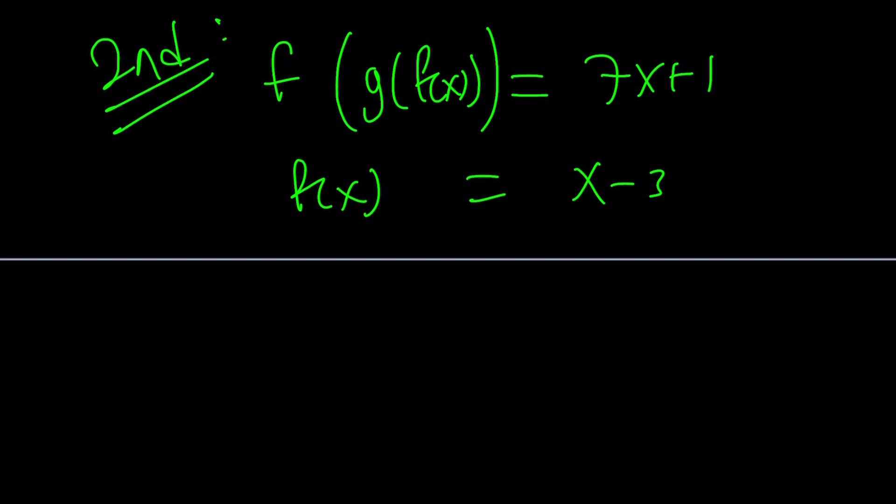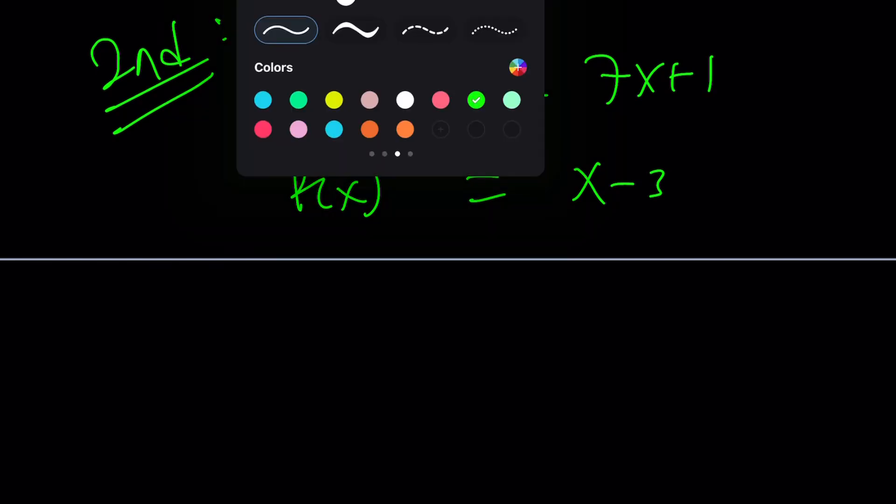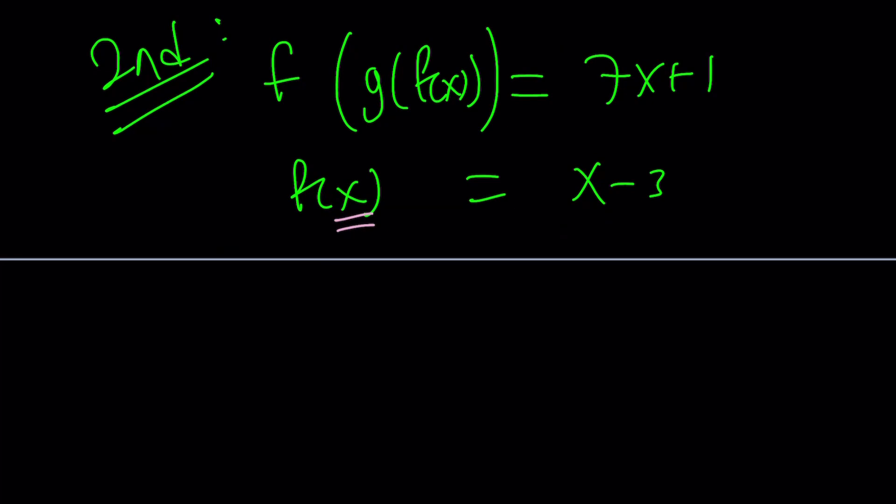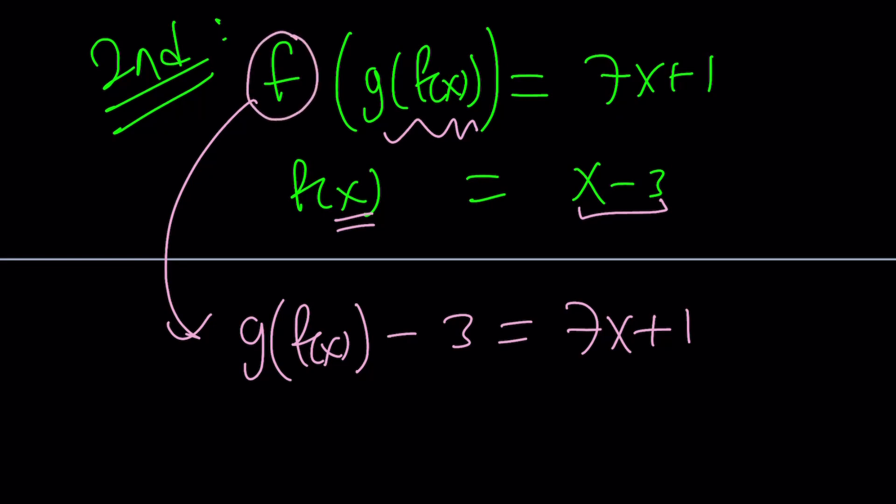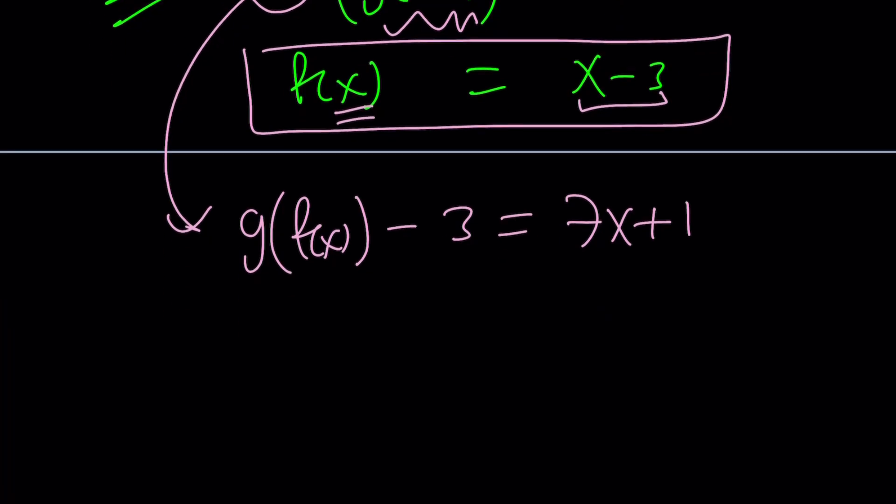So now the second method looks at the following. Well, we do know that f is going to take x and subtract 3 from it. So why not take this, g of f of x, and subtract 3 from it, and that should equal 7x plus 1. Awesome. You like that? We just took the input, subtracted 3 from it, because that's what f does to the input. Make sense? It's all about knowing the definitions. The definition for f is take the input, subtract 3. That's your output.